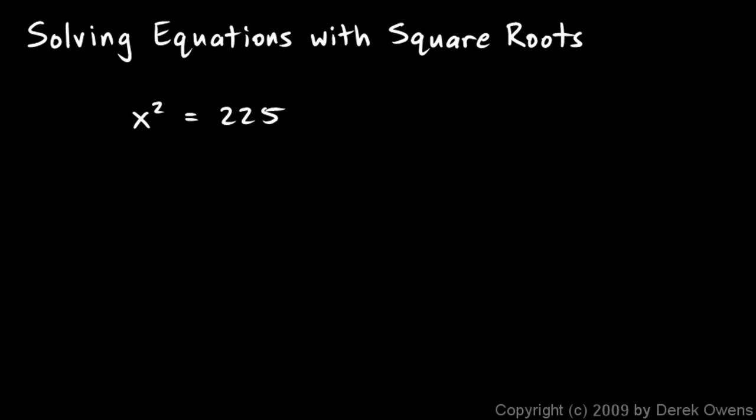This is real simple. The point here is that if the variable we're trying to find is squared, we can often solve it just by square rooting it. In algebra you can do anything you want to an equation as long as you do the same thing to each side.